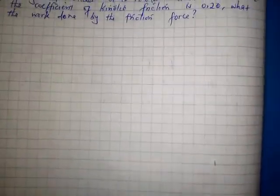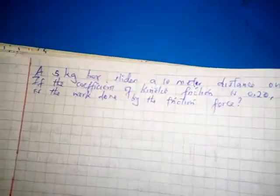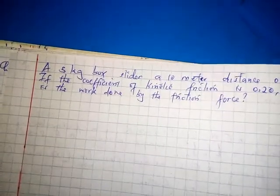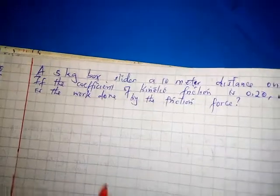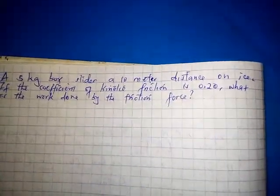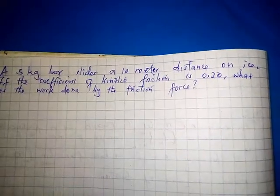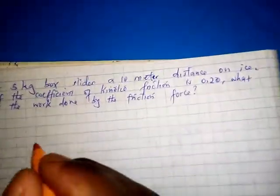Hello everyone, welcome to my YouTube channel. This problem: a 5 kilogram box slides a 10 meter distance on ice. If the coefficient of kinetic friction is 0.20, what is the work done by the friction force?